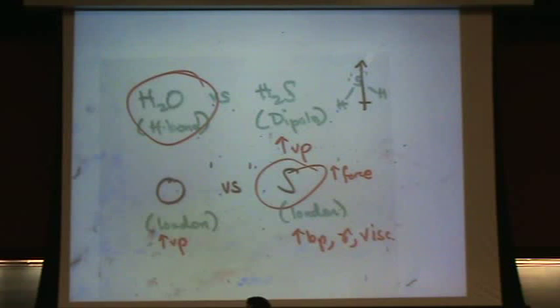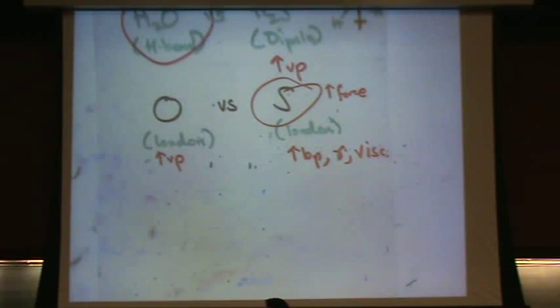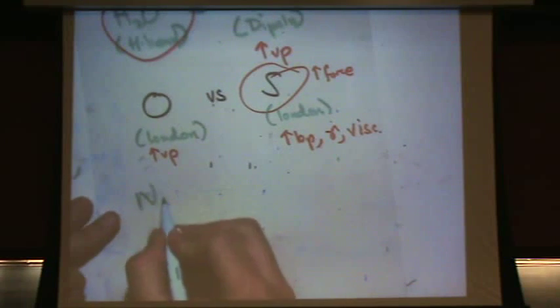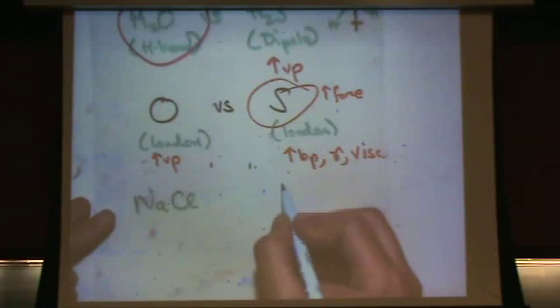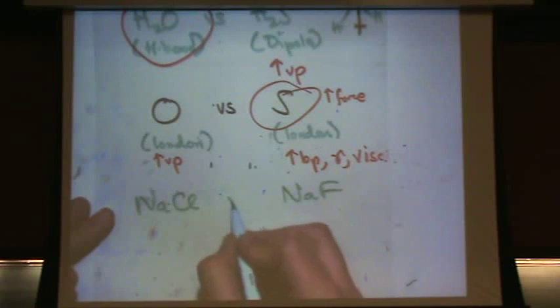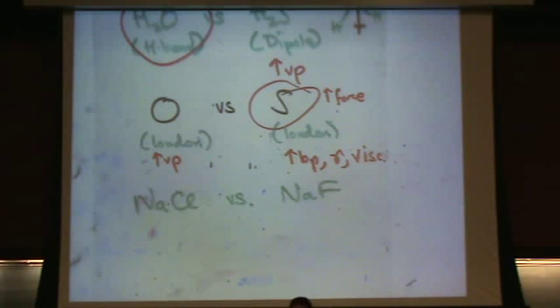Electronegativity in London aren't really related. Electronegativity is related to the strength of a dipole. The higher the difference in electronegativity, the higher the strength of a dipole. Yeah, let's do one. Stick with me. We can do it.